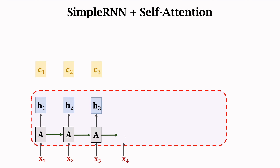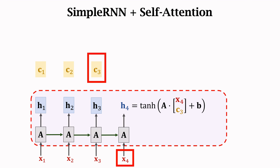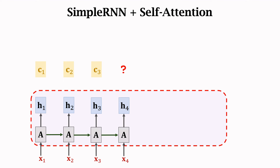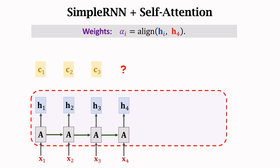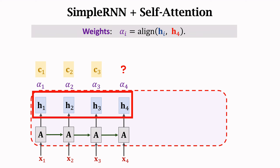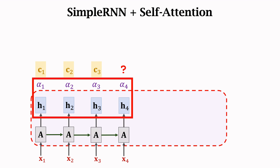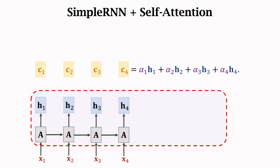Repeating this process, the new state H4 is computed by this equation. H4 depends on the new input x4 and the previous context vector C3. Then we compute a new context vector by comparing H4 with all four states H1 to H4 to see how well they are aligned. We get four weights alpha_1 to alpha_4, each corresponding to a state H. The new context vector C4 is the weighted sum of states H1 to H4.